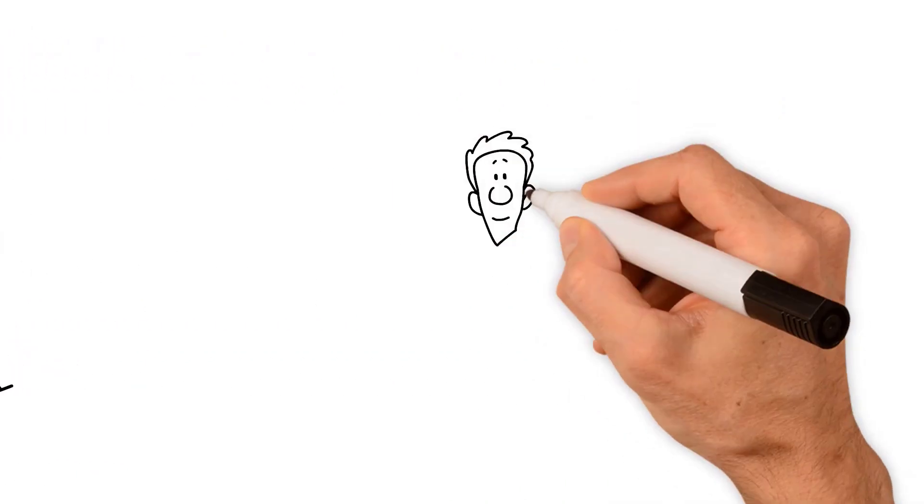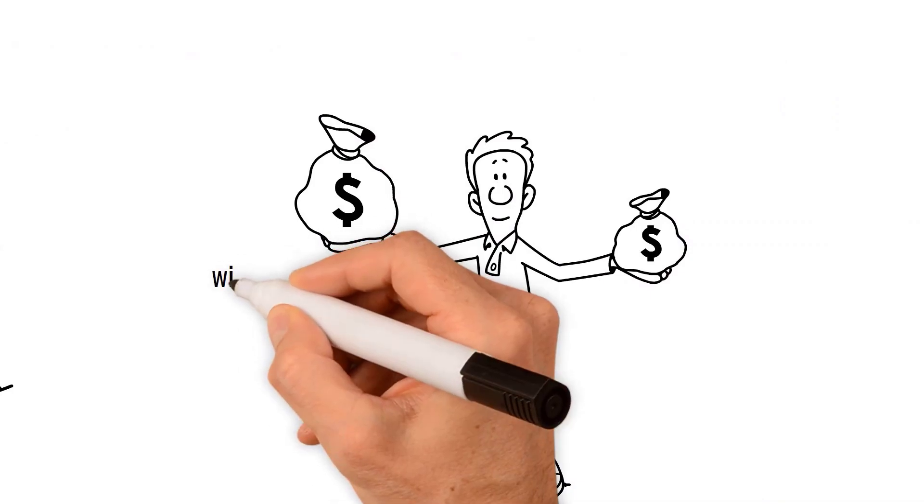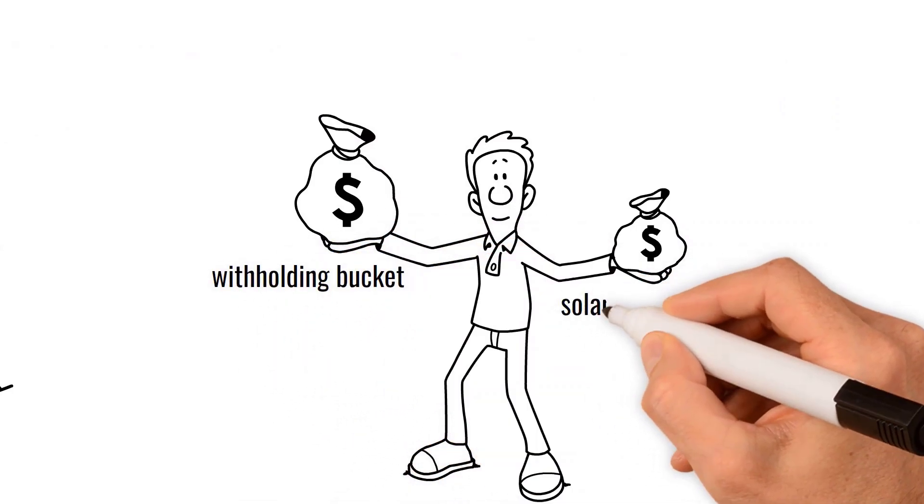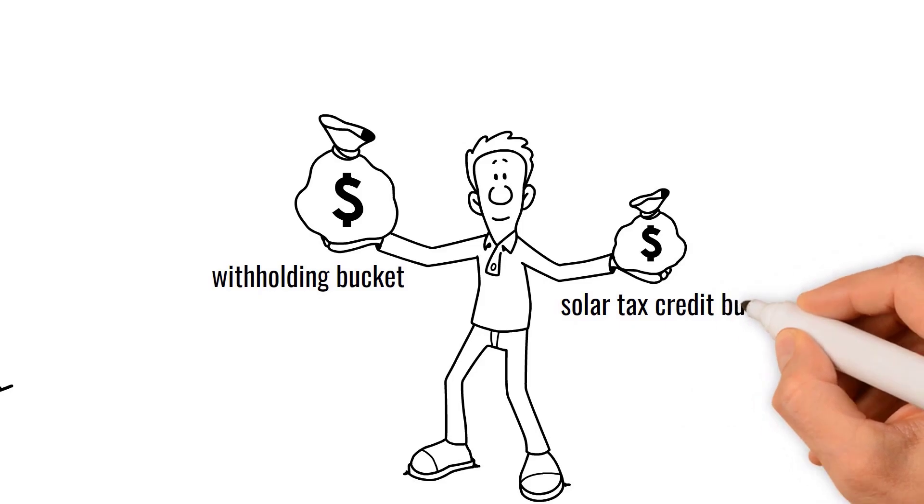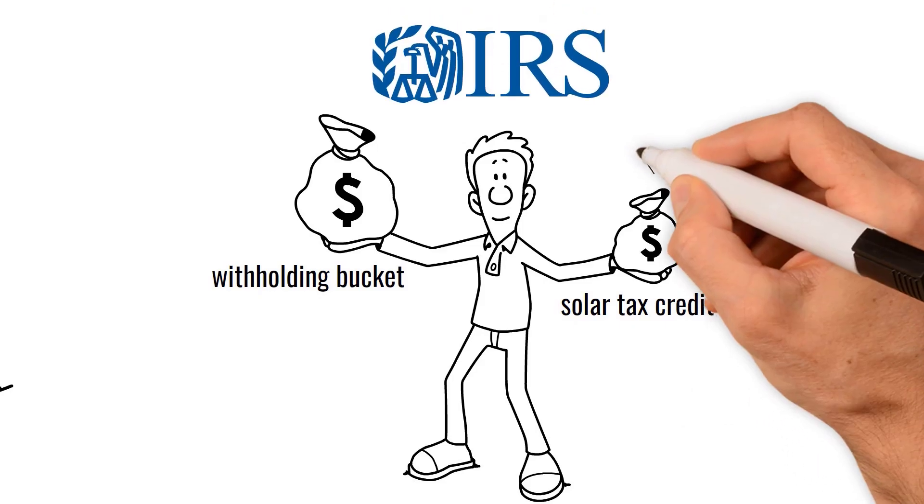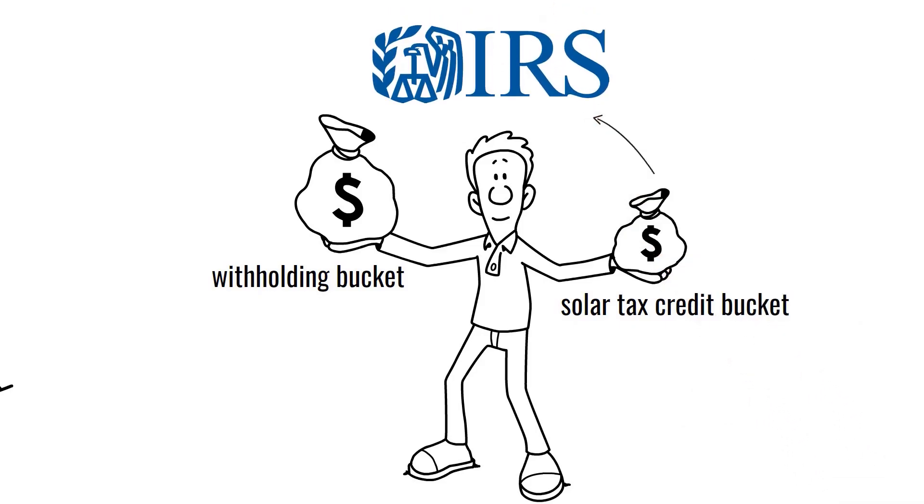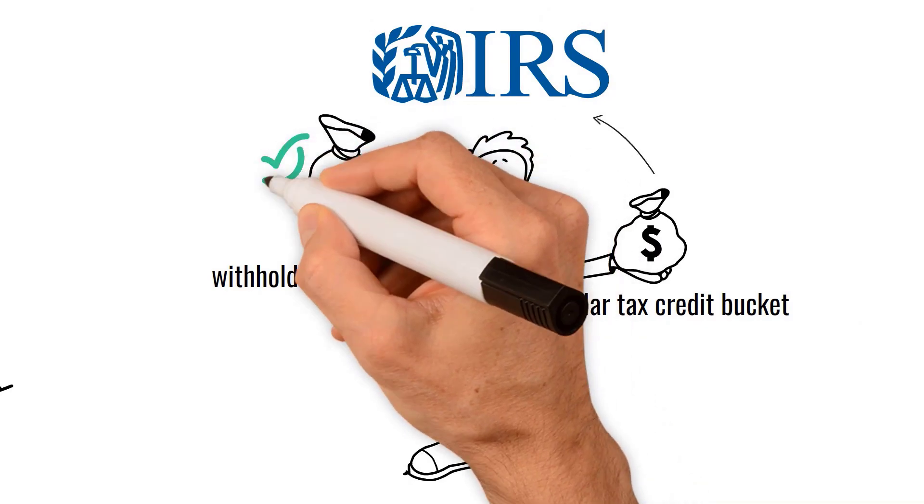Come tax season, he now has two buckets to pay the IRS with: his withholding bucket and his solar tax credit bucket. The IRS will first pull money from Bob's solar tax credit bucket until the bucket is empty, leaving his withholding bucket full.